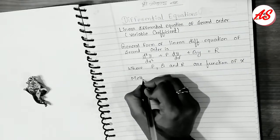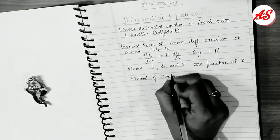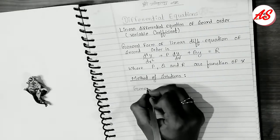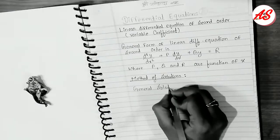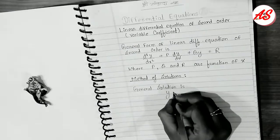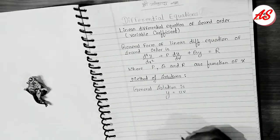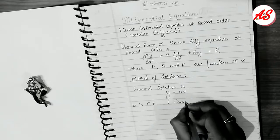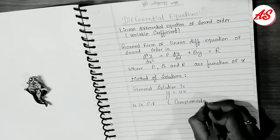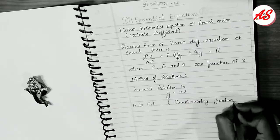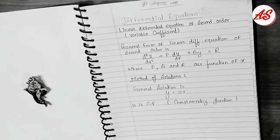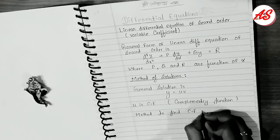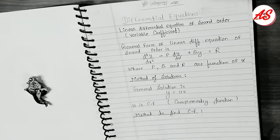The method of solutions: the general solution is y = u·v, where u is the CF. CF stands for complementary function. There are five methods to find the CF.